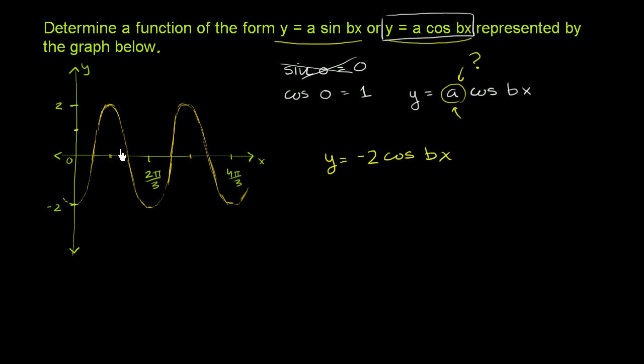And this gels with what we see right over here. The amplitude here, you see that the difference between the maximum value and the minimum value, or the minimum and the maximum is 4. Half of that is 2.